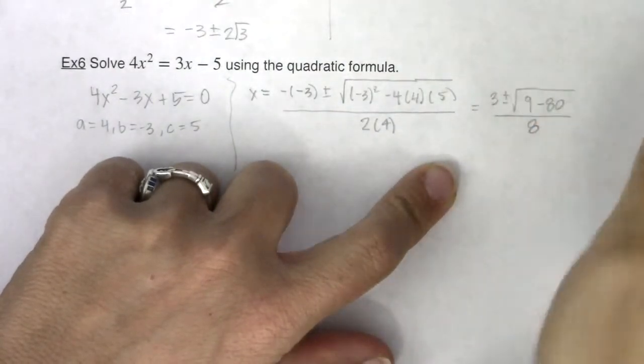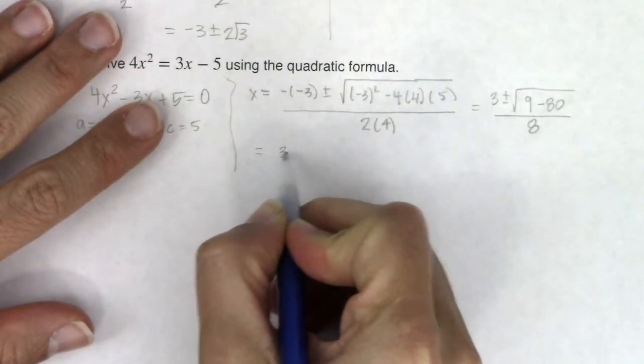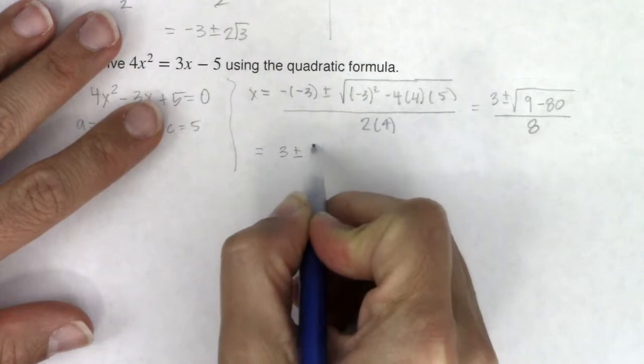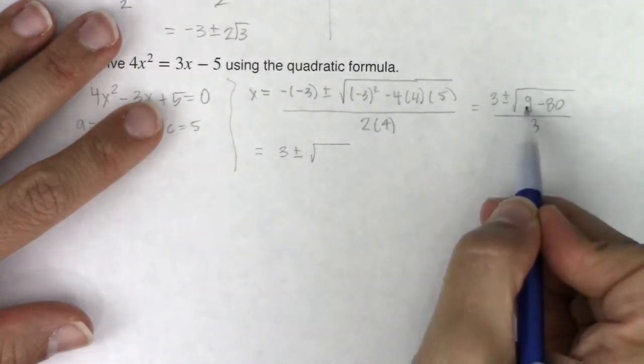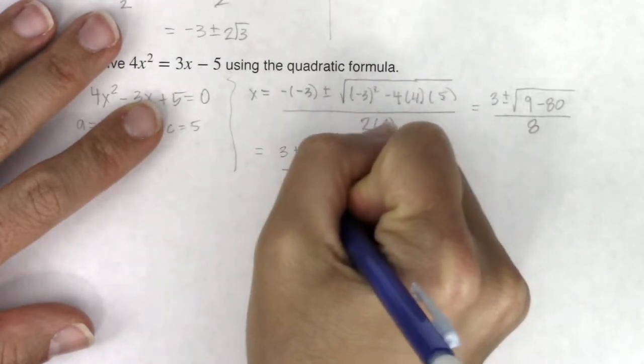Okay, so simplifying that a little bit more, let's take a look. We have 3 plus or minus the square root of, well, 9 minus 80 is negative 71. That's going to be in ratio to 8.